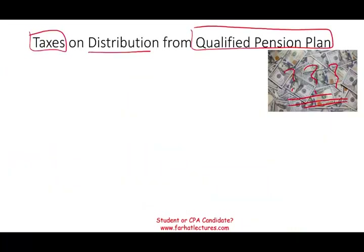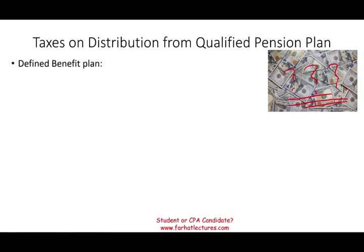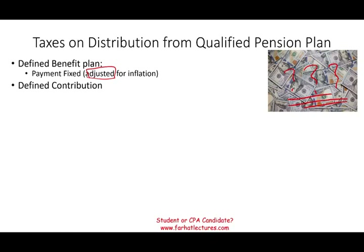Let's talk about taxes on distributions from a qualified pension plan. We looked at qualified pension plans in the prior session — there are many of them. Some are defined benefit plans, meaning you receive a fixed payment, usually guaranteed, perhaps adjusted for inflation. Others are defined contribution plans, where you don't know what you're going to get out because the payment fluctuates with the value of the plan.